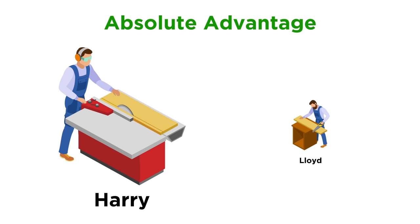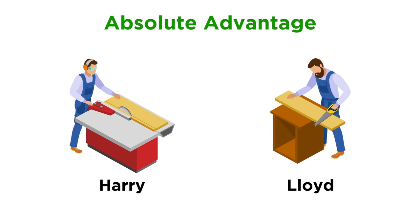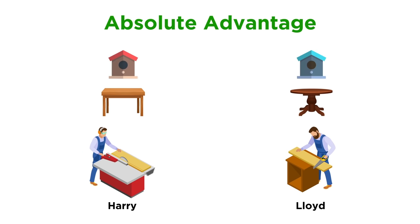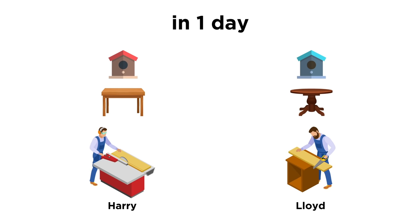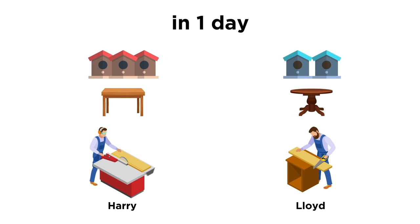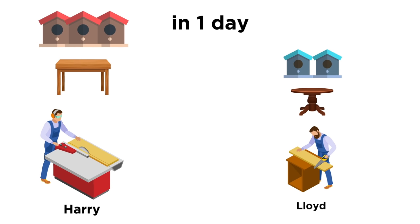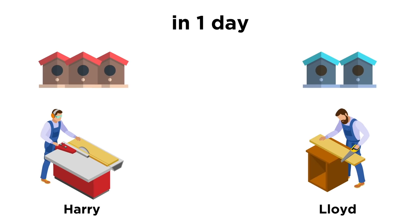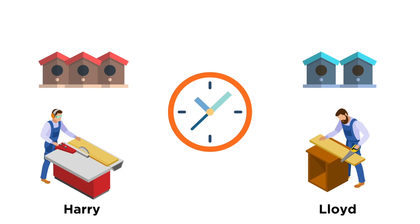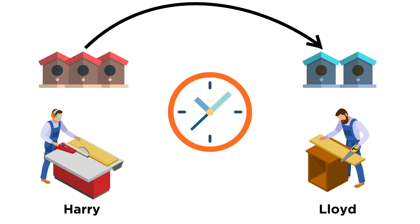Of course, in the real world things are rarely this simple, so now to make things a little trickier, let's say Harry and Lloyd are both carpenters who build tables and birdhouses. In one day, Harry can make either three birdhouses or one table. Lloyd can make either two birdhouses or one table per day. Based on this information, we know that Harry is more productive than Lloyd in making birdhouses. In economic terms, time is the limited resource, and Harry has an absolute advantage over Lloyd because he can make one more birdhouse given the same amount of time.